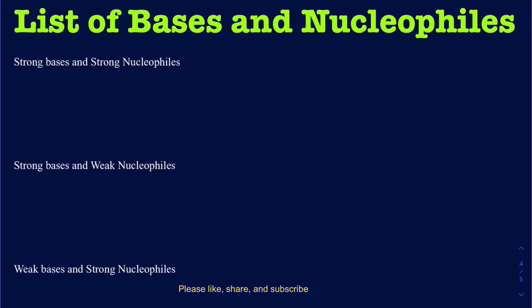Let's start out with strong base/strong nucleophile. A lot of strong bases are actually going to be acting as your strong nucleophiles. One big example is hydroxide, OH⁻. When I write OH⁻, you could have any metal here — something like NaOH or KOH. What really matters is that the nucleophile or base is going to be the OH⁻. These OH⁻ ions are going to be strong bases and also strong nucleophiles.